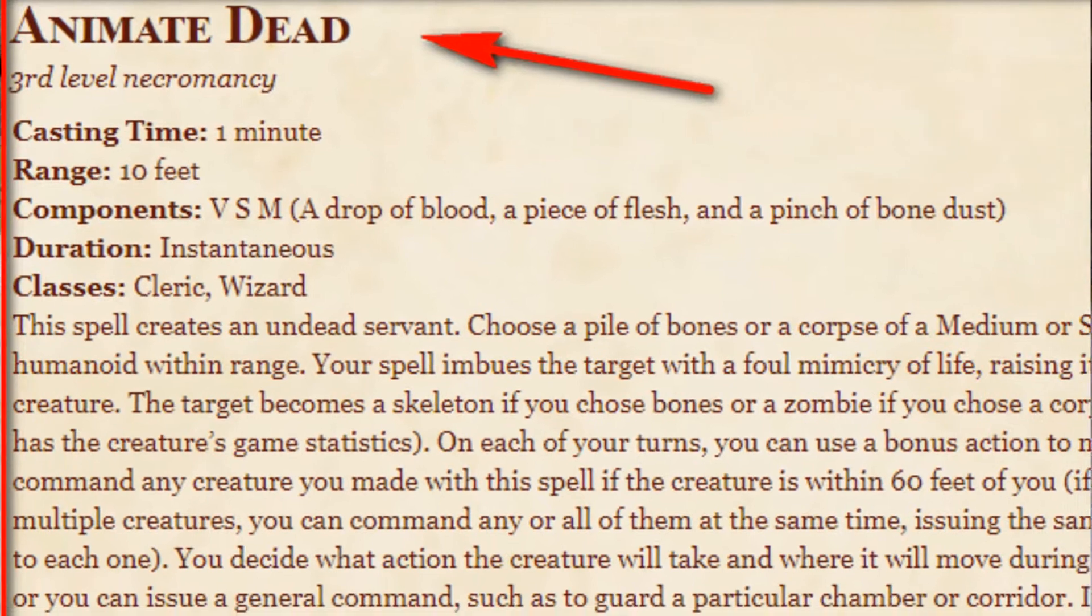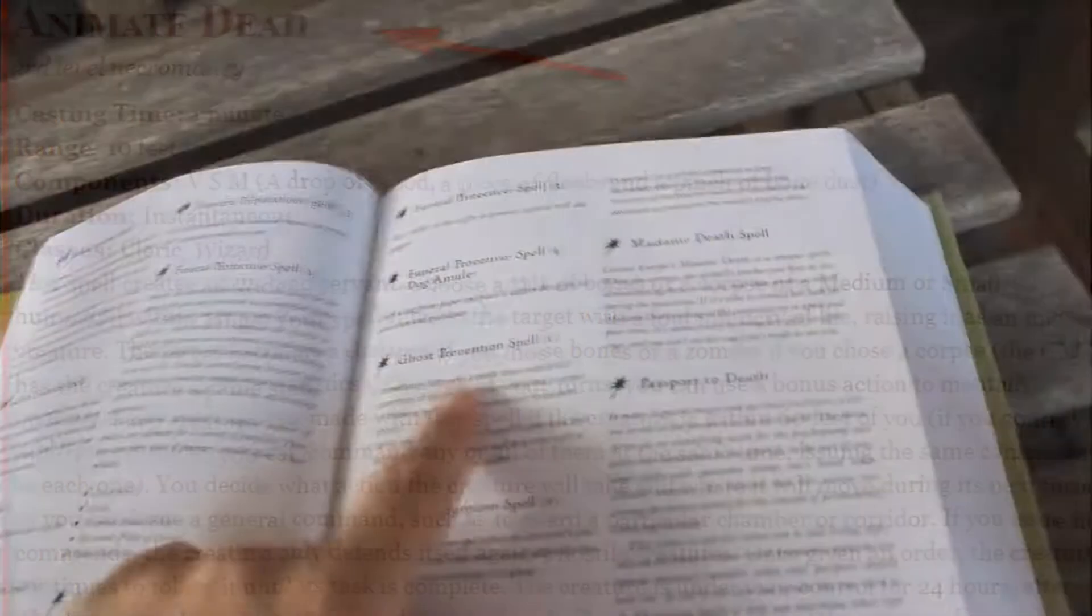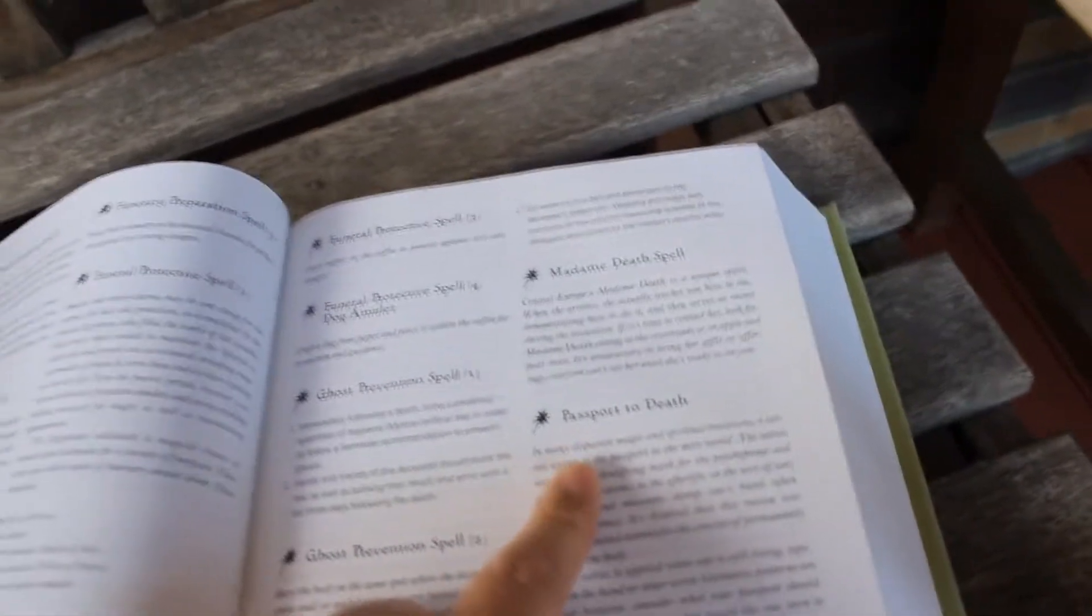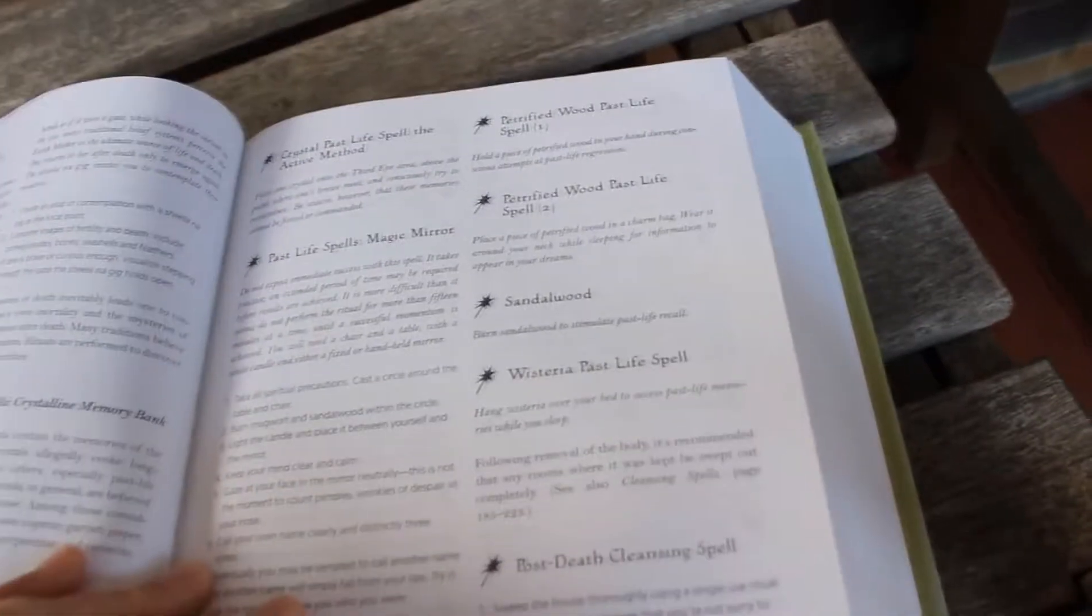Ghost prevention spell. Passport to death. Passport to death. Just jump off a building. There you go. There's your passport. Right.